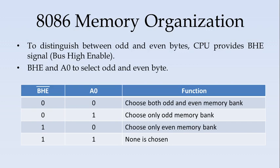If you see the table, bus high enable, whenever it is 0 it is active. So whenever it is 0 it represents a higher order byte. So if both are 0 it chooses both odd and even memory bank. If bus high enable 0 and A0 is 1 it chooses only the odd memory bank. When bus high enable is 1 and A0 is 0 it chooses only the even memory bank. If both are 1 none is chosen.